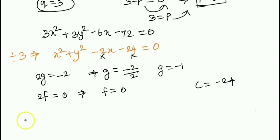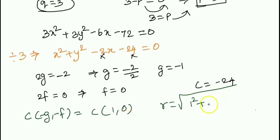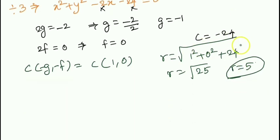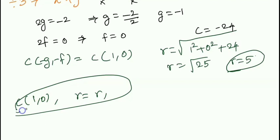Therefore, the center is (-g, -f) equals (1, 0). The radius r equals root of g squared plus f squared minus c, which is root of 1 squared plus 0 squared minus (-24), giving root of 25, so r equals 5. Center is (1, 0) and radius equals 5.